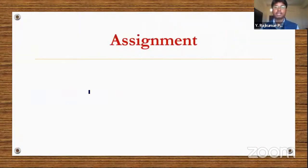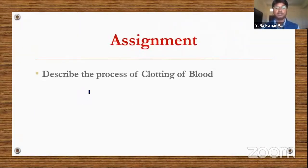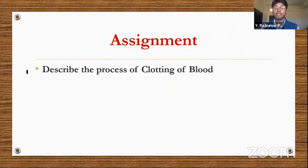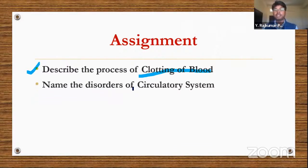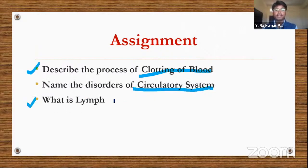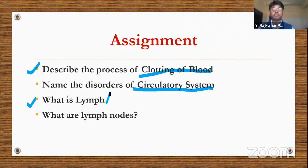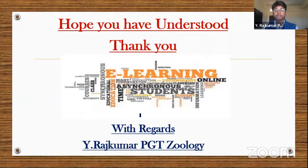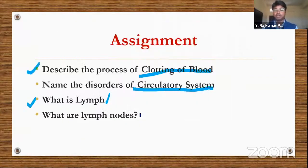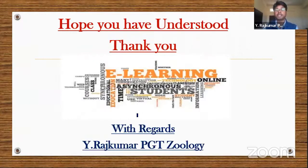The assignment for today's class covers what we have studied. The questions are: describe the process of clotting of blood; name the disorders of the circulatory system; what is lymph and how is it different from blood; and what are the lymph nodes and their functions.